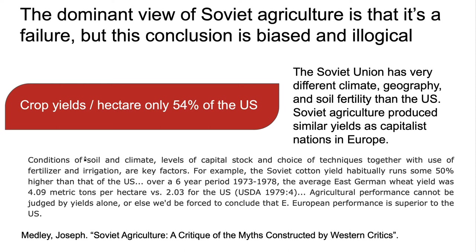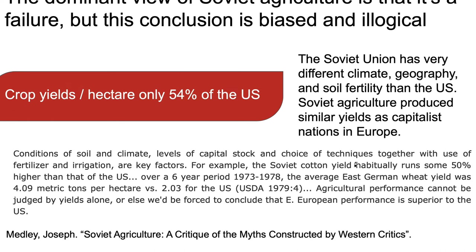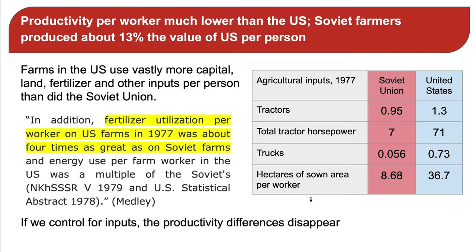Here's a relevant quote: 'The conditions of soil and climate, levels of capital stock, and choice of techniques, together with the use of fertilizer and irrigation, are key factors. For example, the Soviet cotton yield habitually runs some 50% higher than that of the United States. Over a six-year period from 1973 to 1978, the average East German wheat yield was 4.09 metric tons per hectare versus 2.03 for the US. Agricultural performance cannot be judged by yields alone, or else we'd be forced to conclude that Eastern European performance is superior to the US.'